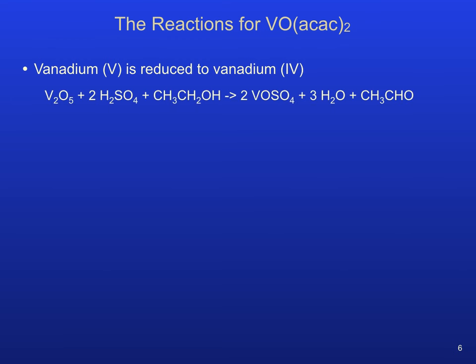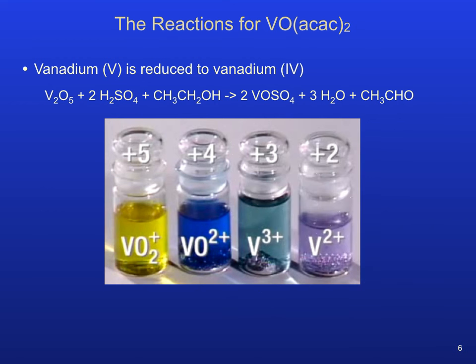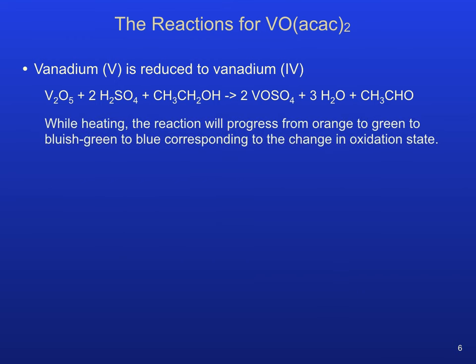Vanadium is added to the reaction mixture using the compound vanadium pentoxide. Vanadium is reduced from plus 5 to plus 4 by ethanol in the presence of sulfuric acid, with the primary product of VO-SO4, or vanadyl sulfate, formed in this reaction. The oxidation state of vanadium greatly affects its color, as shown in separate vials containing vanadium in different oxidation states. Only the plus 5 and plus 4 oxidation states are present in your reaction mixture, and you should see a color transition from orange to green, then to bluish green, and finally to blue during the reaction.